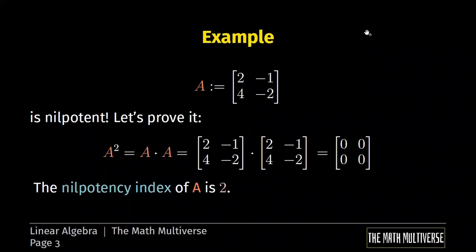That means that not only our matrix A squared is the zero matrix, that also means that the nilpotency index of the matrix A is equal to 2.